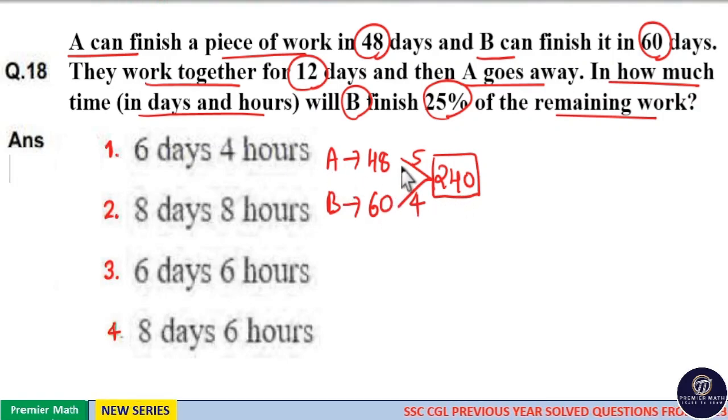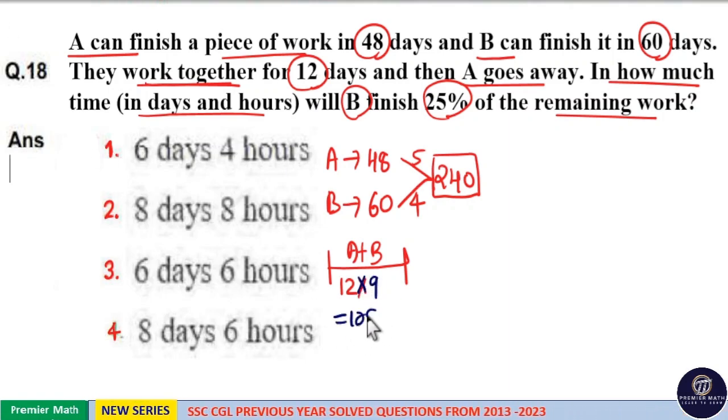Now A can finish 5 units of work in a day and B can finish 4 units of work in a day. And here they work together for 12 days. That is A and B work together for 12 days. In 12 days they can finish 5 plus 4, 9 units of work. So in 12 days they can finish 12 into 9, 108 units of work. That is A and B together, when they work together in 12 days, they finish 108 units of work.